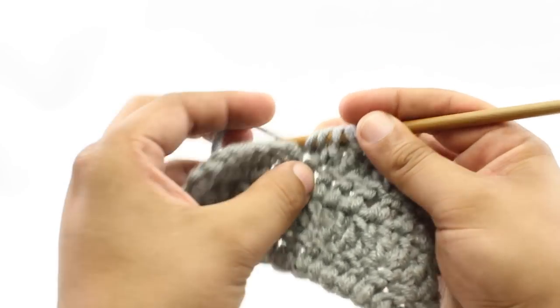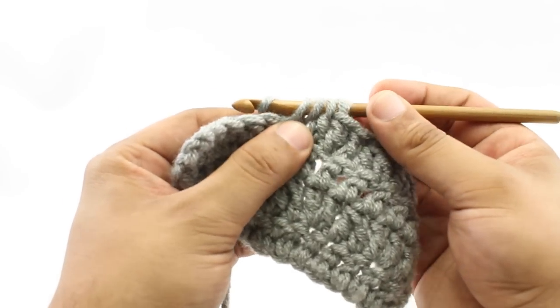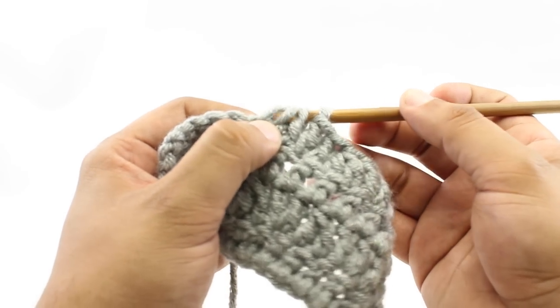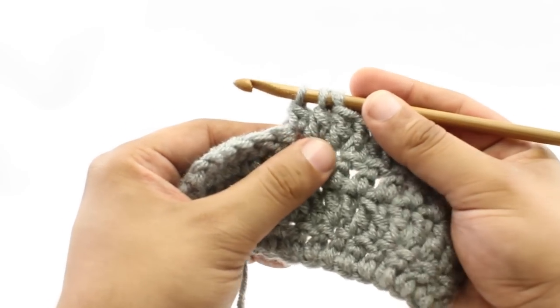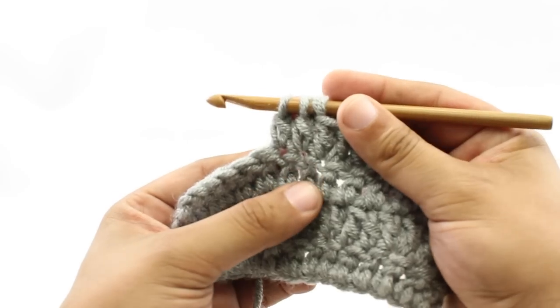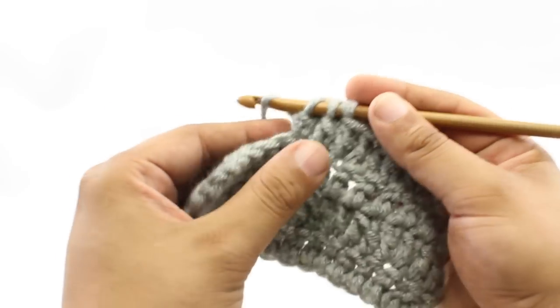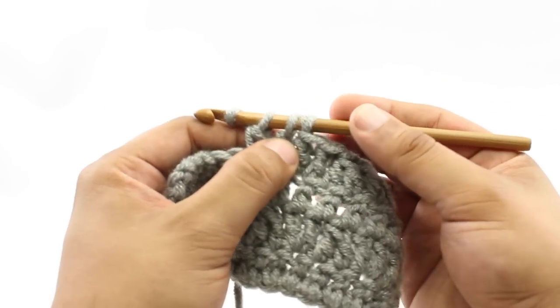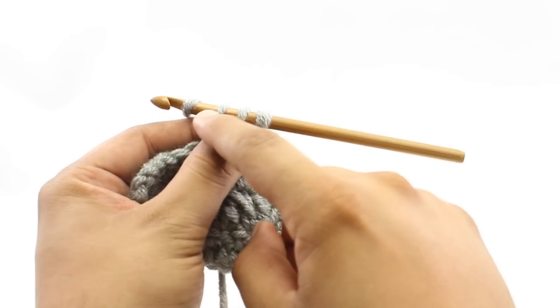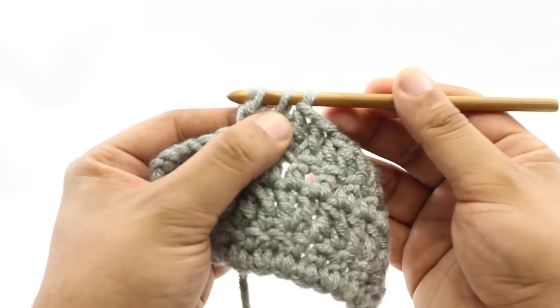For step eleven, we'll yarn over again. And step twelve, we will draw through the next two loops on our hook. Now for step thirteen, we're going to yarn over. And step fourteen, we're going to draw through these last three loops on our hook.